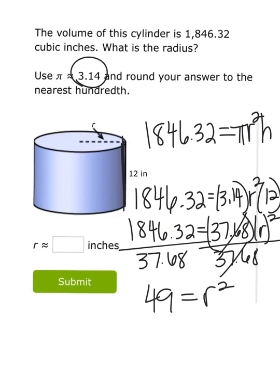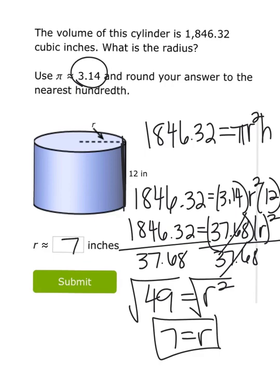Now just to solve for radius, the inverse of squaring it would be to take the square root. So we would take the square root of each side, and the square root of 49 is 7. So we would find that the radius would be 7 inches.